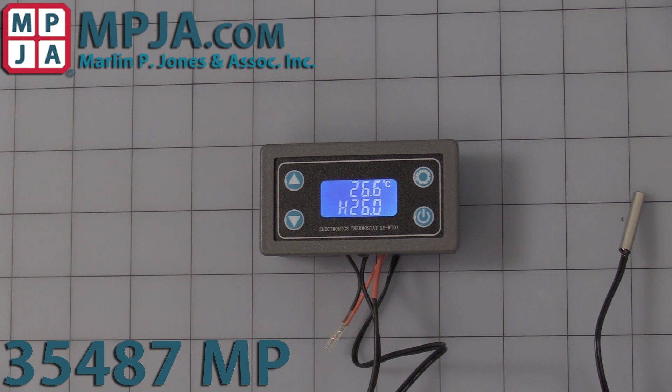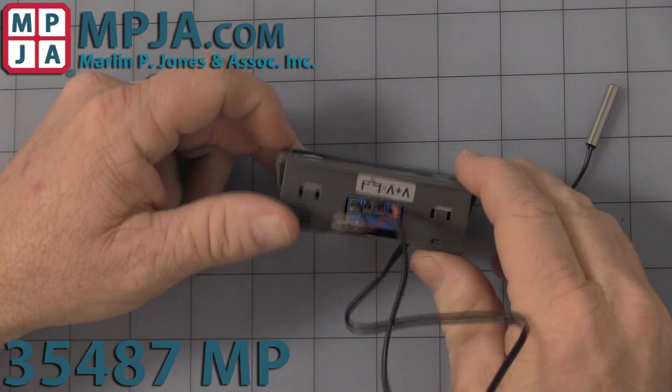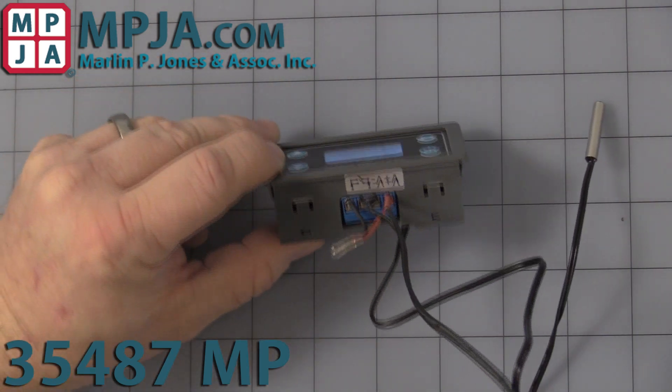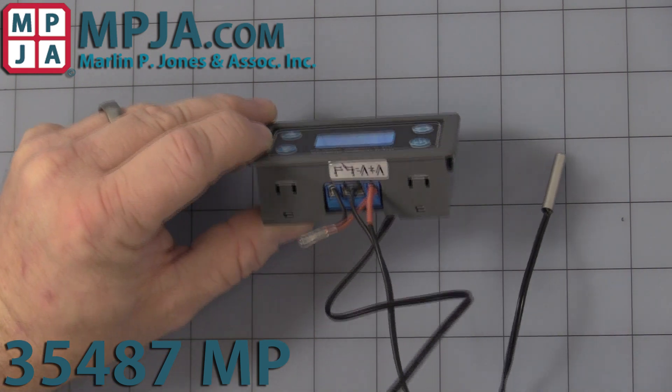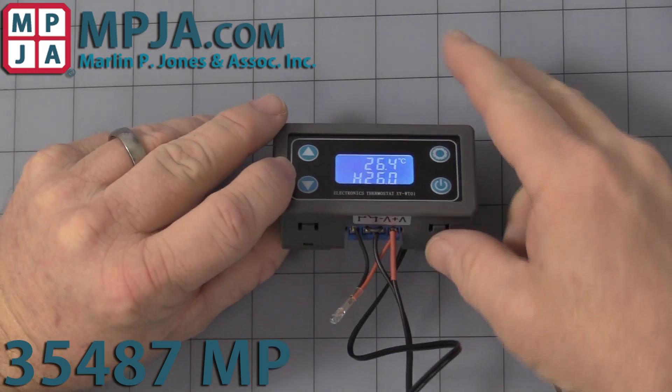Hello, today's video is on stock number 35487NP digital thermostat. Just to show you to begin with, I have this hooked up to a 12-volt DC plug transformer and hooked up a nice little incandescent lamp to show you when the relay is on to give you a nice visual.